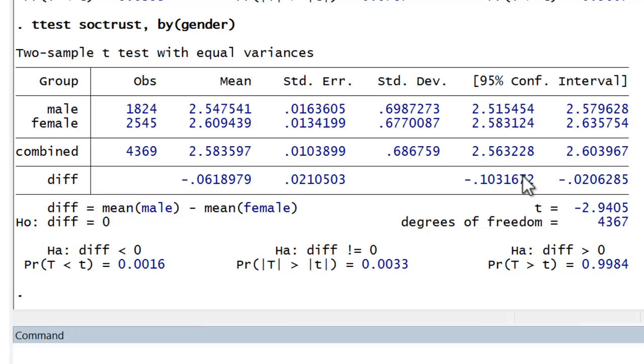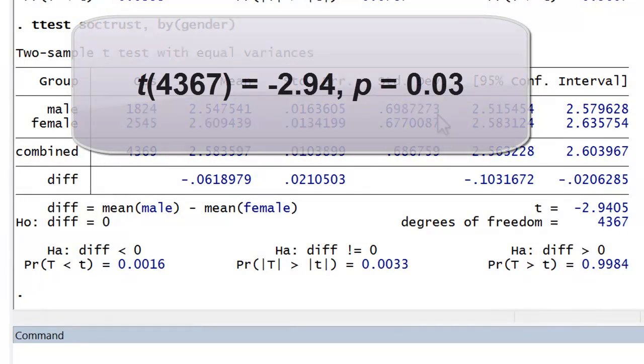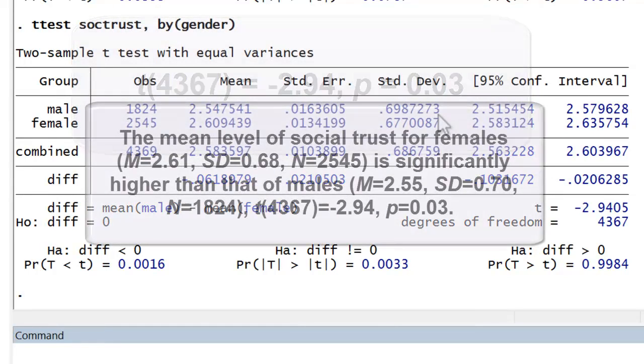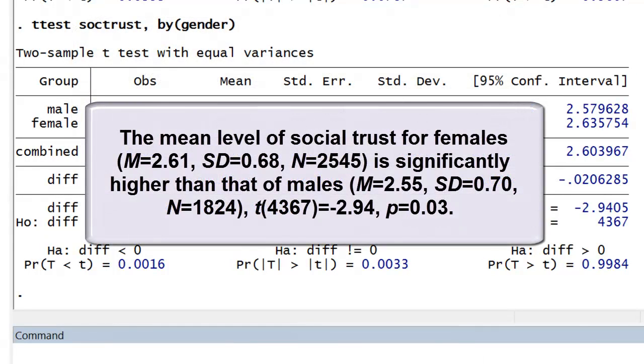So that's how you would interpret the t-test output. And one could write it up in a number of ways. Here's a short form. And, again, if you were to write it in a little bit more of an elaborated narrative form, it would look something like this.